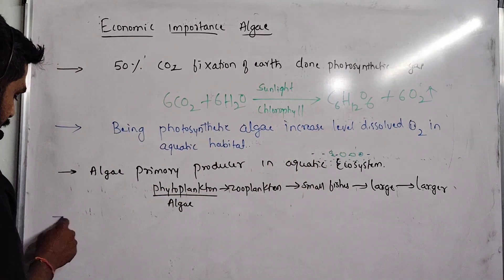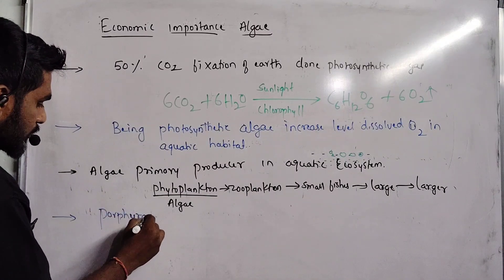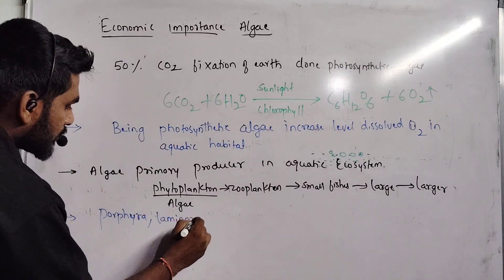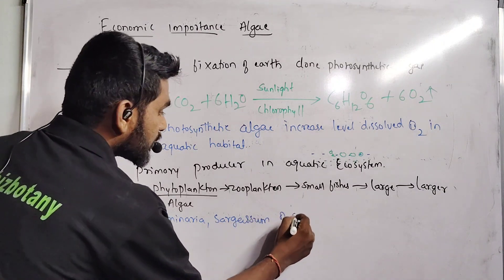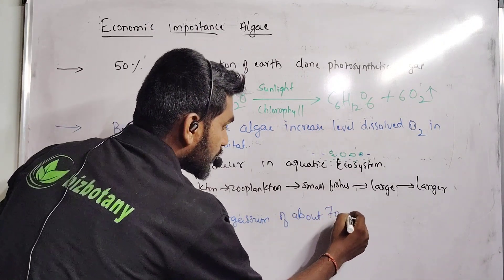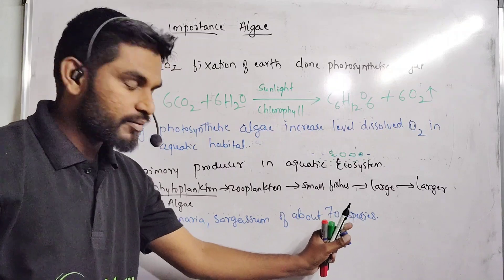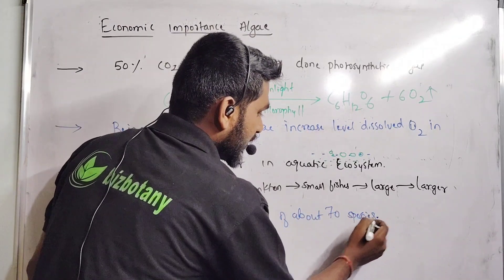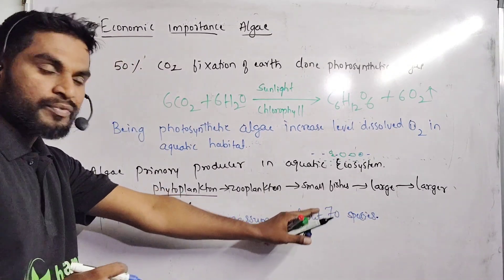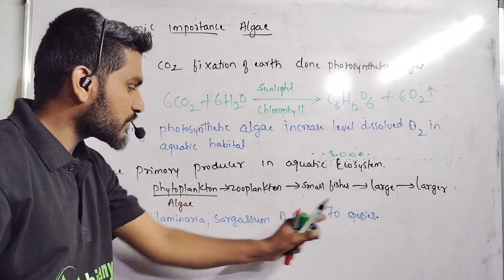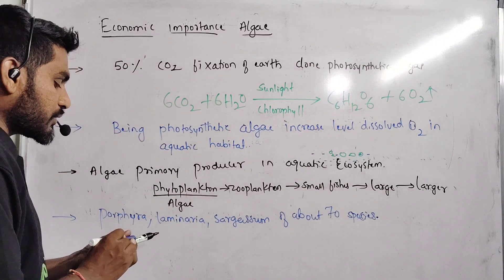Next, we are using algae like porphyra, laminaria, sargassum, and about 70 other species of algae as a source of food daily. For example, in China, people prepare soups from algae. We are using algae as a source of food.